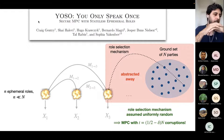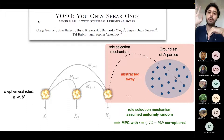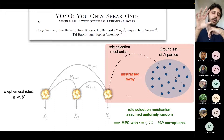Why is this interesting? They managed to do a lot of cool stuff with this assumption. If you have worst-case corruptions on the ground set of parties, then because the role selection mechanism is uniformly random, these translate into IID random corruptions on the roles.